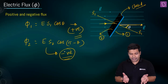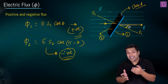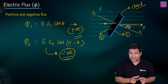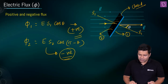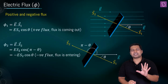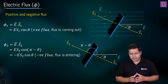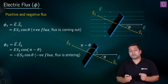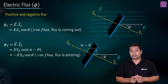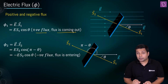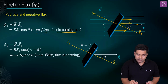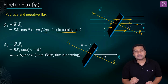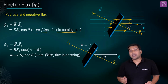For a three-dimensional body, the incoming flux — the flux entering the body — is taken as negative. The flux coming out is taken as positive. This sign convention follows from the acute or obtuse angle between the area vector and the electric field: outgoing flux gives an acute angle (positive), and incoming flux gives an obtuse angle (negative).